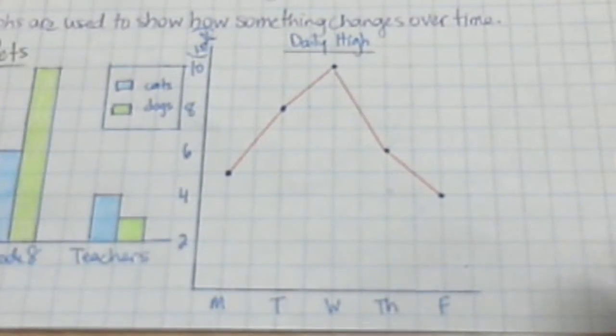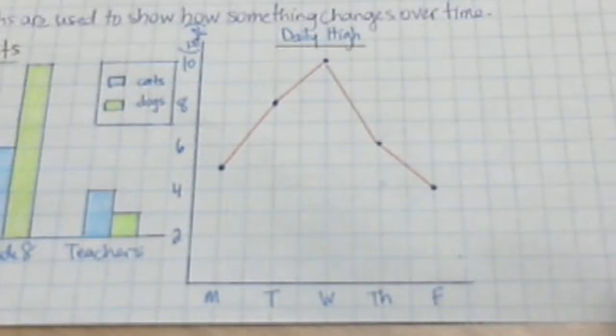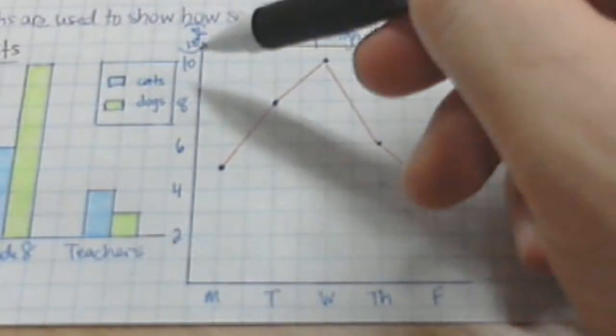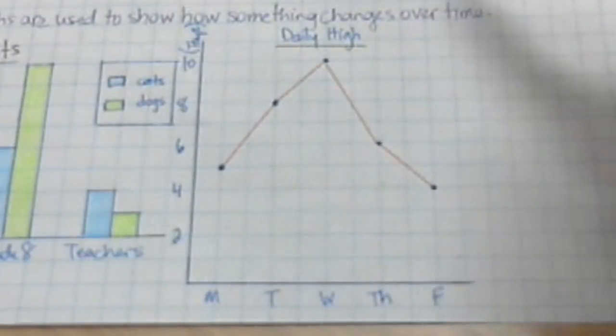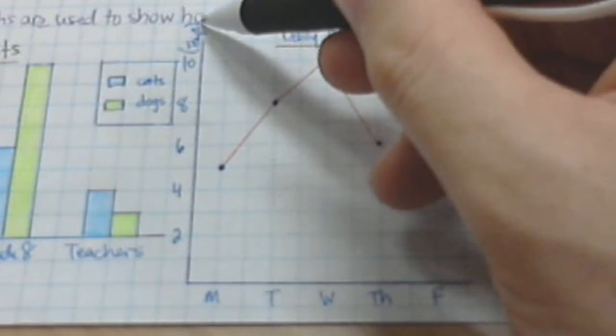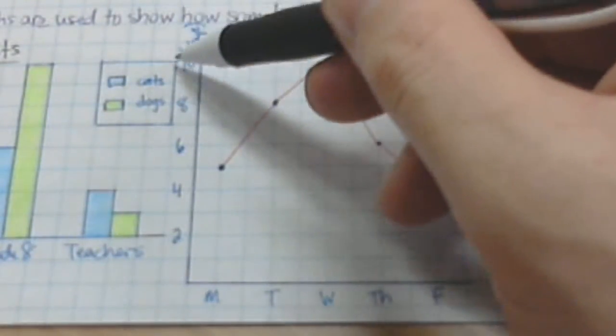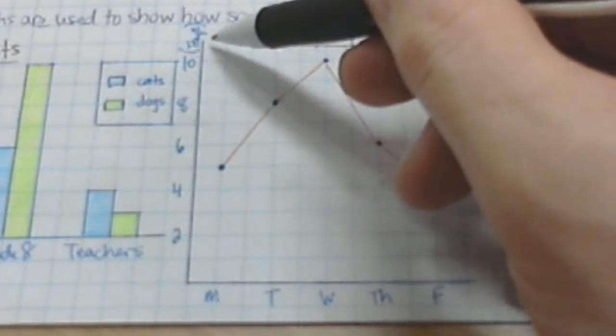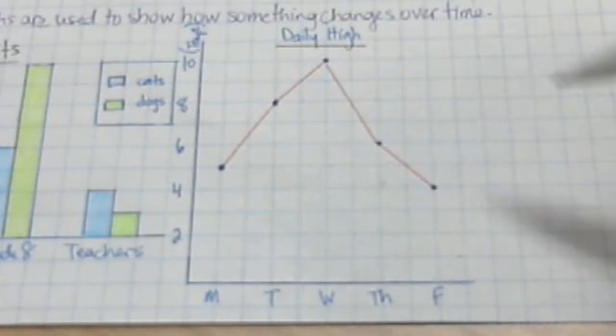Broken line graphs, the definition for that is just how to show how something changes over time. And again, I have a title. I have a y-axis that's drawn out. These numbers represent temperature in degrees Celsius. It's kind of hard to show because I jammed the two graphs in really close. But it's temperature in degrees Celsius.